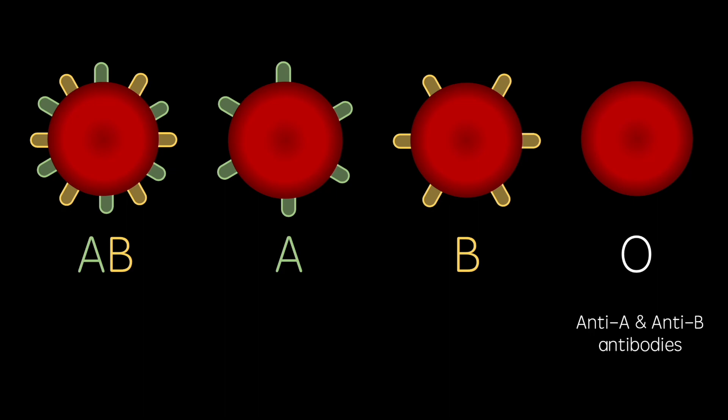Type B blood cells lack only A antigens and so their corresponding white blood cells produce anti-A antibodies. Similarly, type A blood cells lack B antigens and so their corresponding white blood cells produce anti-B antibodies. Type AB red blood cells however possess both A and B antigens, so their corresponding white blood cells recognise both and therefore produce neither type of antibody.